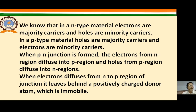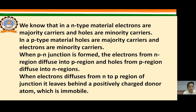When the p-n junction is formed, electrons from the n-region diffuse into the p-region, because in the n-region electrons are in the majority. Similarly, holes from the p-region diffuse into the n-region, because holes are in the majority in the p-region.